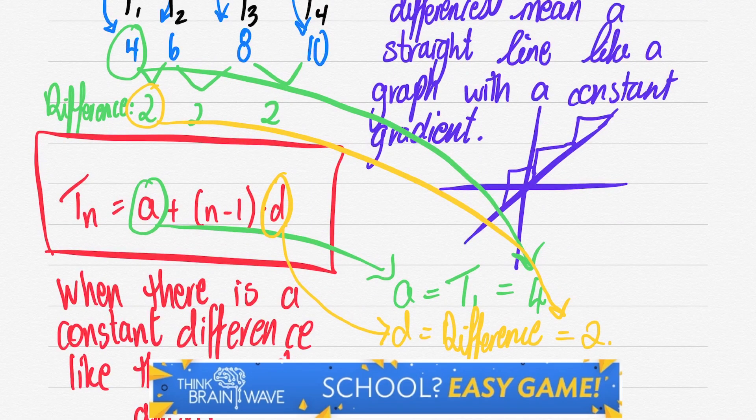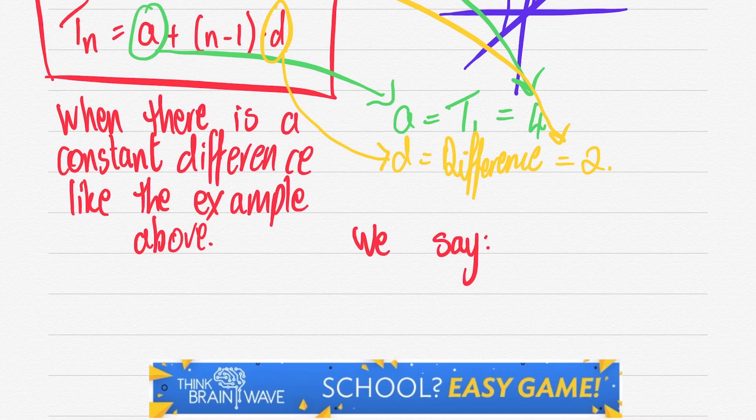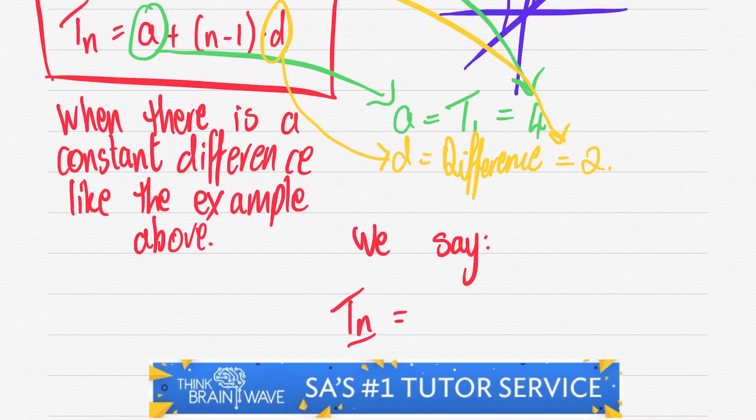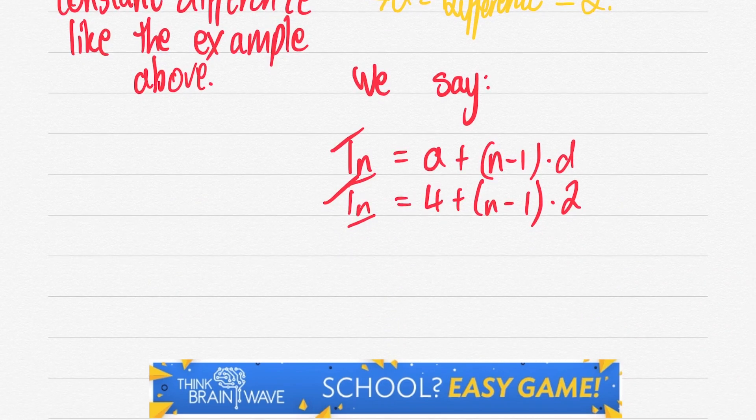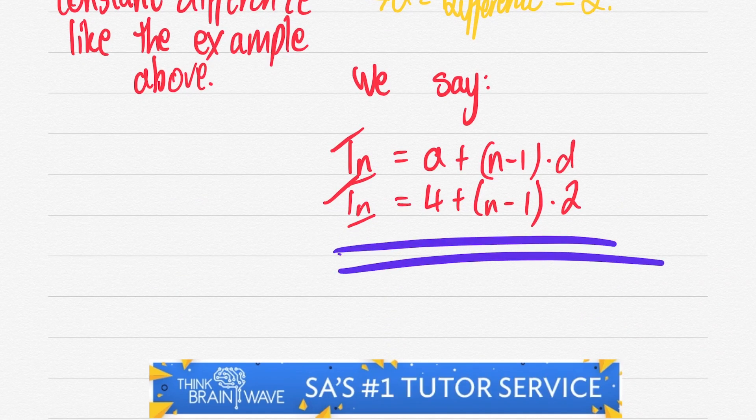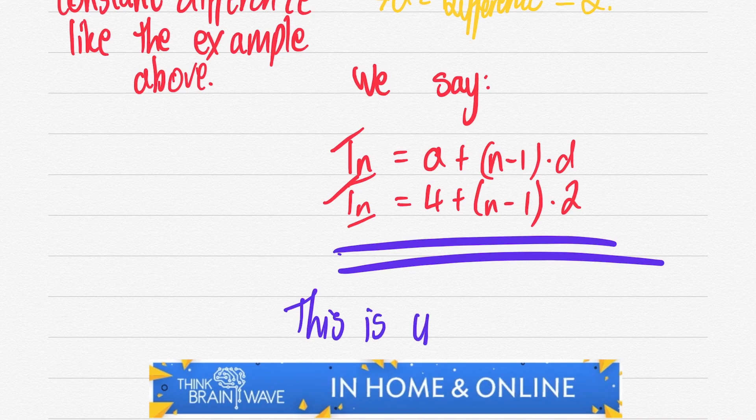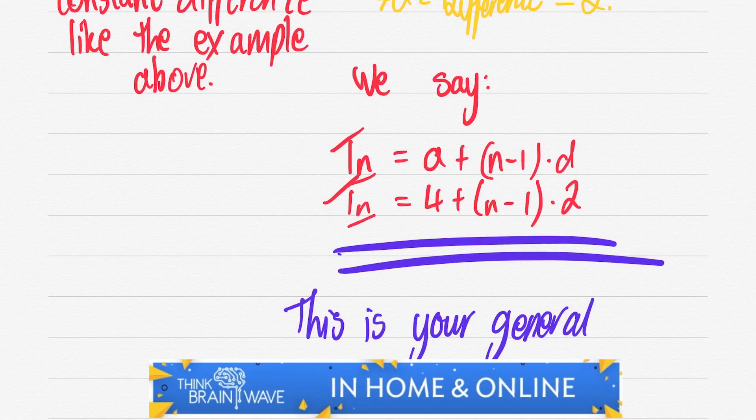So now let's look at this going forward. We say tn is equal to a plus n minus 1 in brackets times d. Tn is equal to 4 plus n minus 1 times 2 just by substitution. Now this is your general solution.